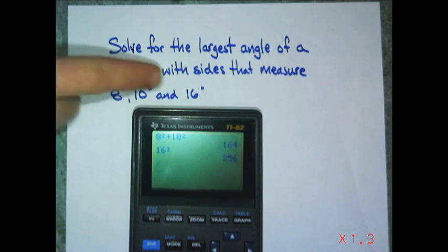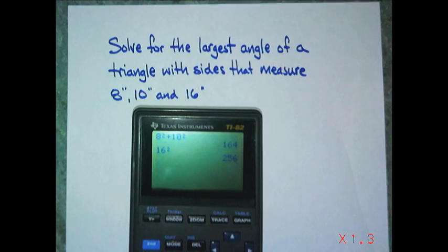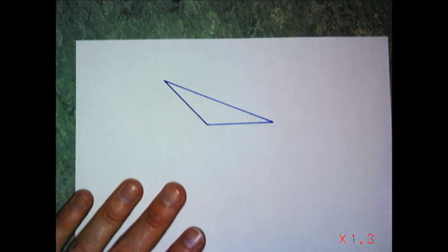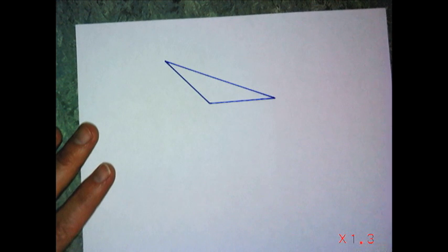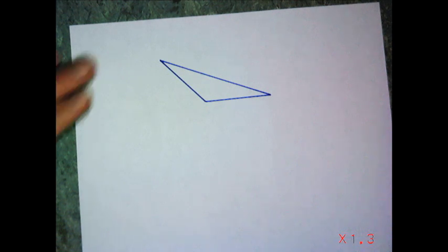So the angle opposite the side of 16 is going to be my largest angle, and it's going to be an obtuse triangle. I've sketched out an obtuse triangle. Instead of tackling the problem right away with the numbers, let's do it for all obtuse triangles — pretend I've given you all three sides.